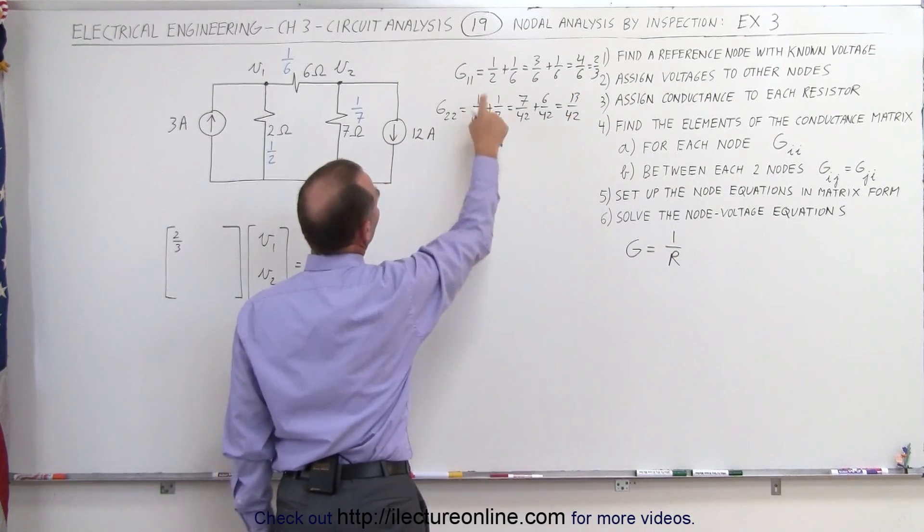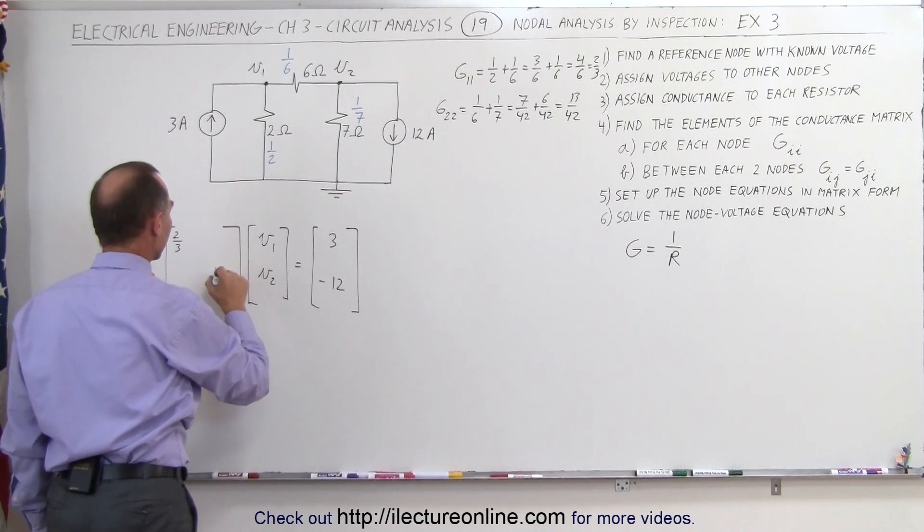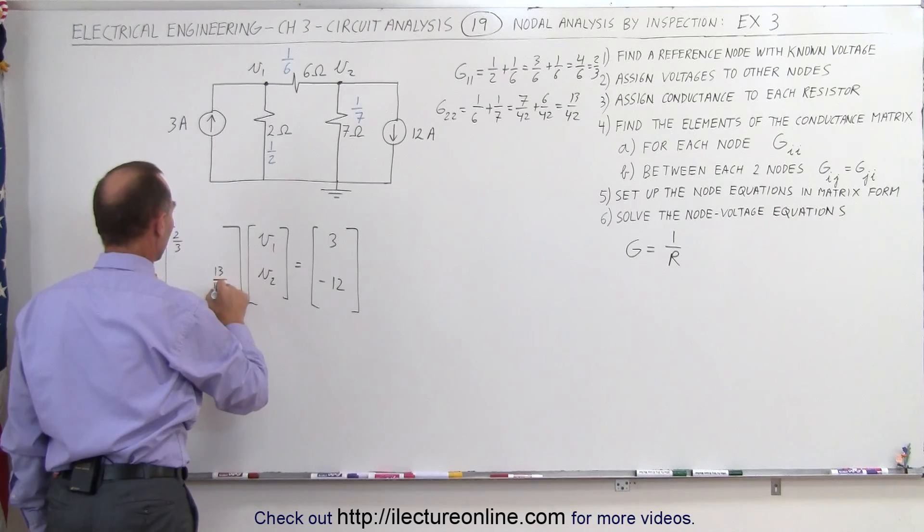See, that's right, that's 7, yep, that would be correct. That's our second element right here in the diagonal, 13 divided by 42.